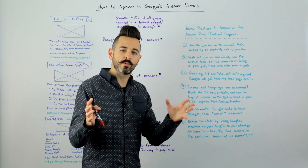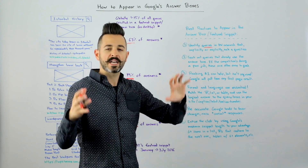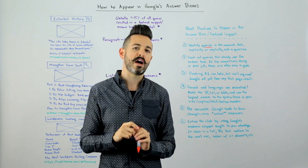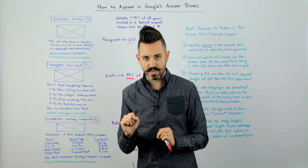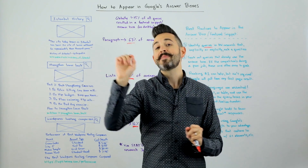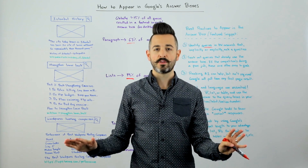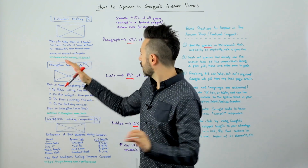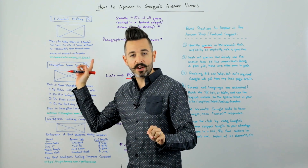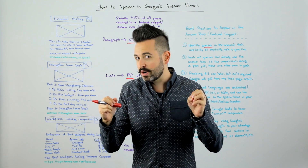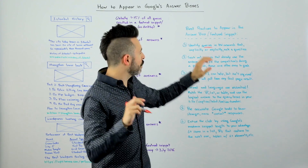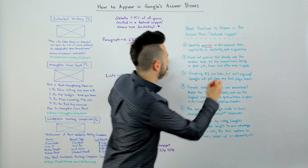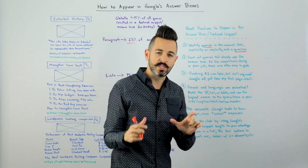First, you need to do your keyword research and identify those queries that implicitly or explicitly are asking a question. The question needs to be slightly broader than what Google can deliver directly out of Knowledge Graph. For example, if you ask 'how old is Istanbul?' they might say '3,000 years old' with no citation to Wikipedia or any other website. These are queries that are slightly broader than a single piece of knowledge, but do demand a question being answered. You can find those in your keyword research pretty easily.